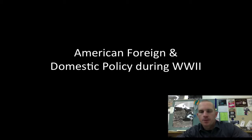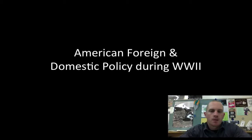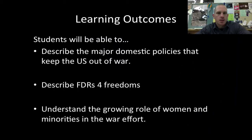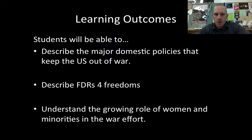Hey everybody, we're back with another episode of Flipped History. Our topic today is American foreign and domestic policy during World War II. Our learning outcomes: you should be able to describe the major domestic policies that kept the U.S. out of war, starting with neutrality; describe FDR's Four Freedoms; and understand the growing role of women and minorities in the war effort.